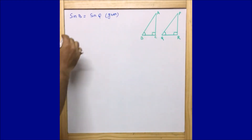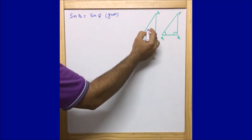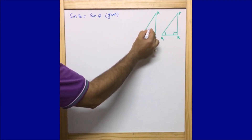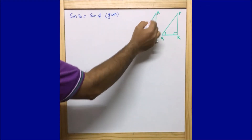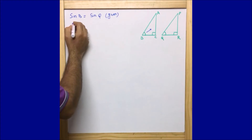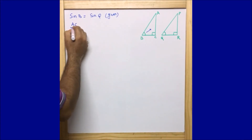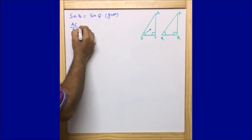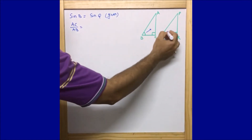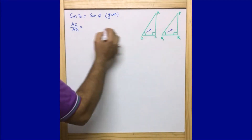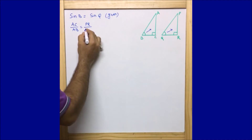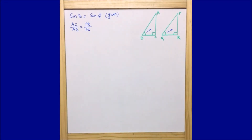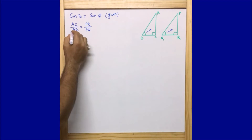Now, what is sine B here? Sine B is the side opposite to angle B, that means AC divided by the hypotenuse. The hypotenuse here is AB, so I can write sine B as AC divided by AB. Similarly, sine Q is the side opposite to angle Q, which is PR divided by the hypotenuse PQ.